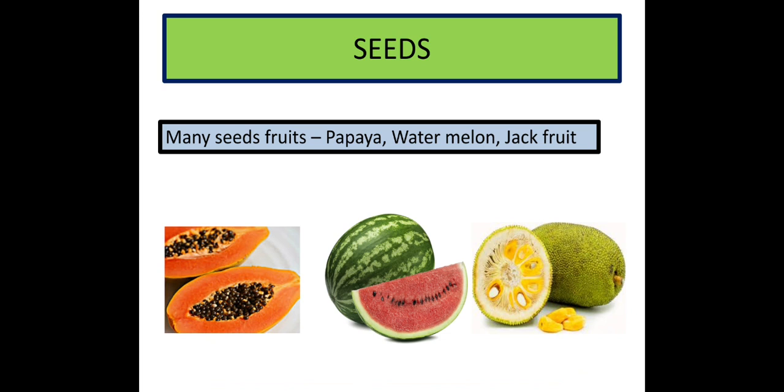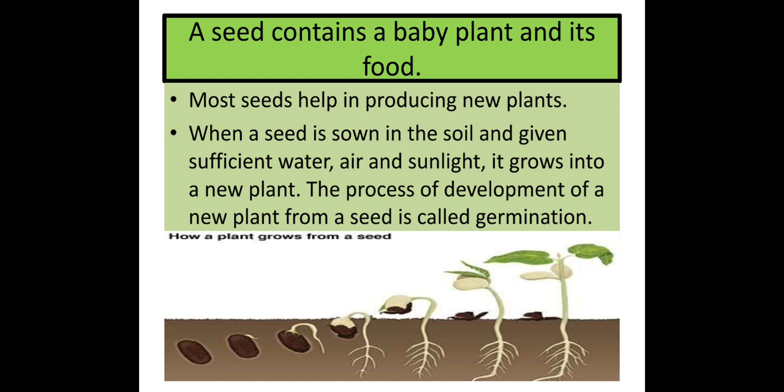After many-seed fruits, now let's see what is the main use of a seed. Seeds help in producing new plants. When a seed is sown in the soil and given sufficient water, air and sunlight - yaad hai na, photosynthesis ke liye water, carbon dioxide aur sunlight chahiye tha? Similarly, water, air and sunlight chahiye for a seed also - then it grows into a new plant. We call this process germination.